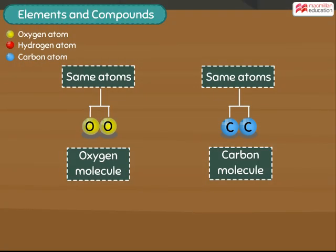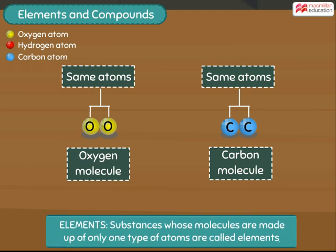Do you notice that the molecules of oxygen and carbon are made up of only one kind of atom? Well, all such molecules — molecules that are made up of only one type of atom — are called elements.